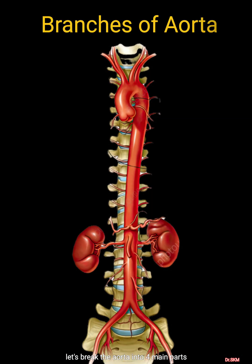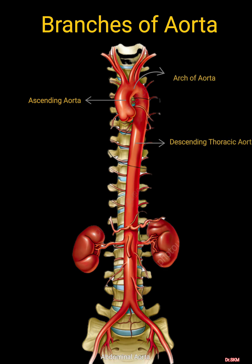The aorta has four parts: the ascending aorta, arch of aorta, descending thoracic aorta, and abdominal aorta. The ascending aorta gives off the coronary arteries, which supply the heart.